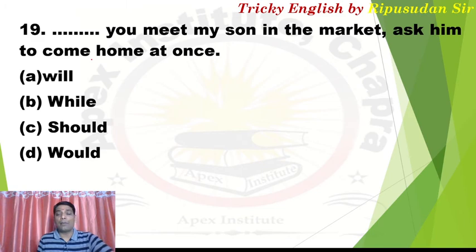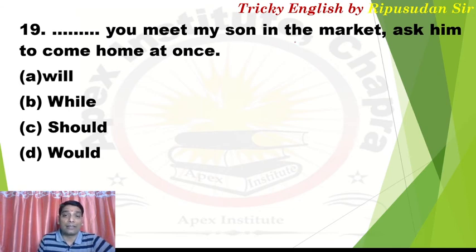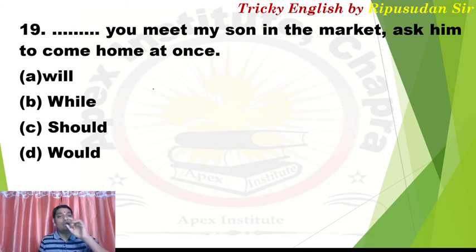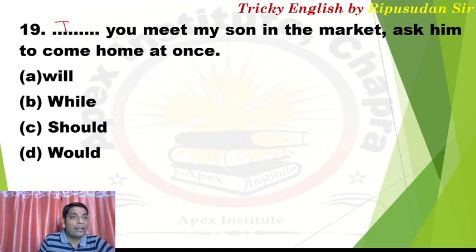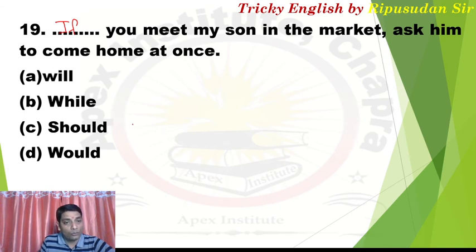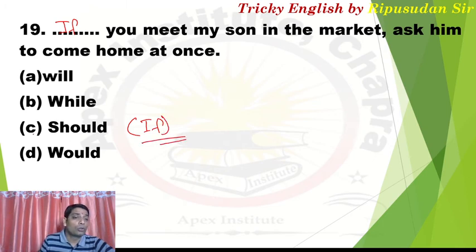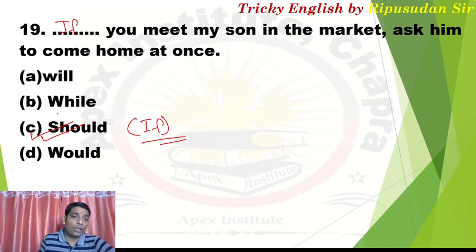Question 19: 'Does you meet my son in the market, ask him to come home at once.' The meaning is 'if' — if you happen to meet my son in the market, ask him to come home immediately. We need 'if', but 'if' is not in the options. 'Should' can also be used in the sense of 'if' — I have taught my classroom students that when 'if' is not in the options, you can confidently select 'should'. So answer for Q19 is C — 'should'.